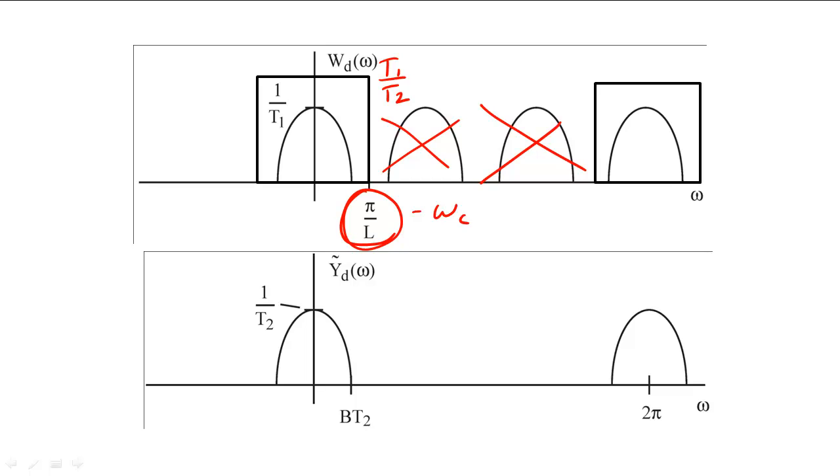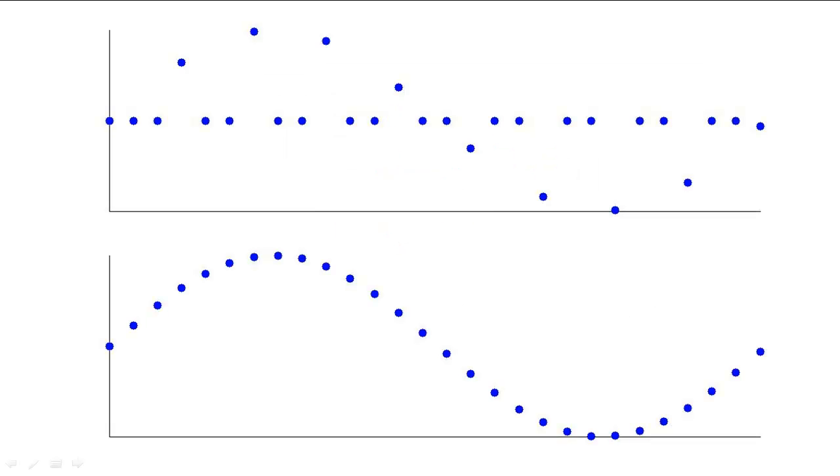This low-pass filter will smooth out the upsampled waveform so that the output of the interpolator is a smooth waveform.